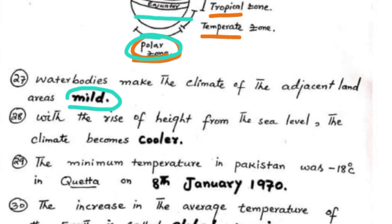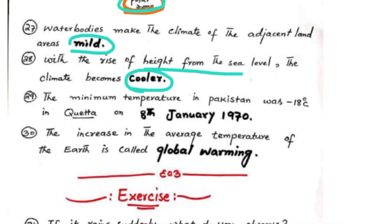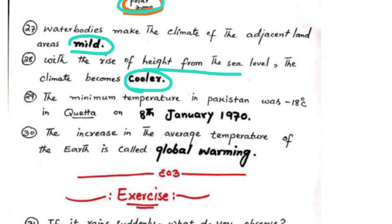With the rise of height from the sea level, the climate becomes cooler. The minimum temperature in Pakistan was minus 23 degrees centigrade.